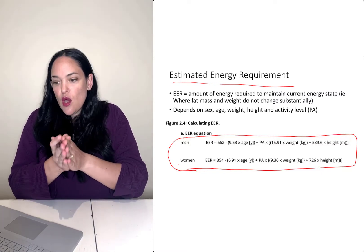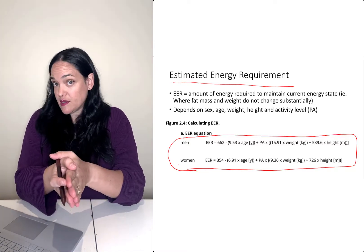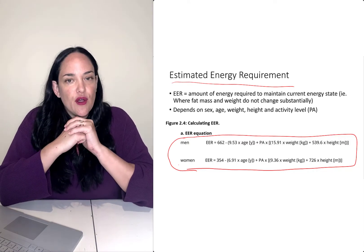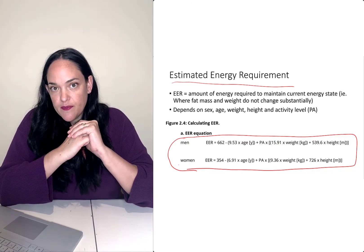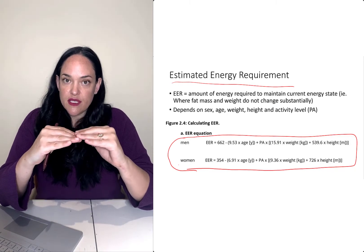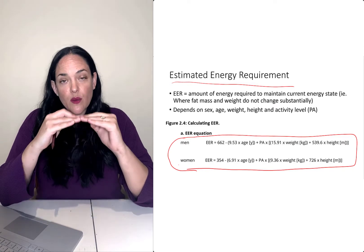So once you've calculated your estimated energy requirement, which MyFitnessPal does for you, let's say it says that your EER is 2,000 calories a day. If you were to continuously eat 2,000 calories a day, that means that your fat mass and your weight would stay the same.